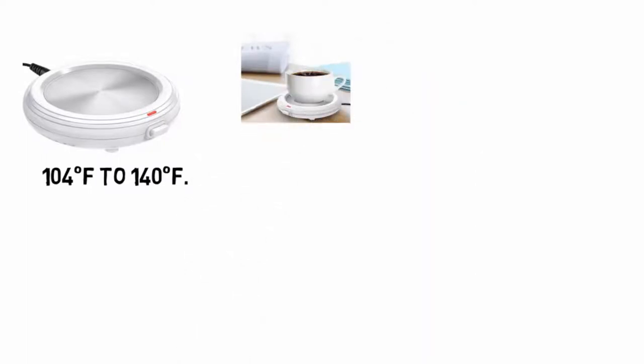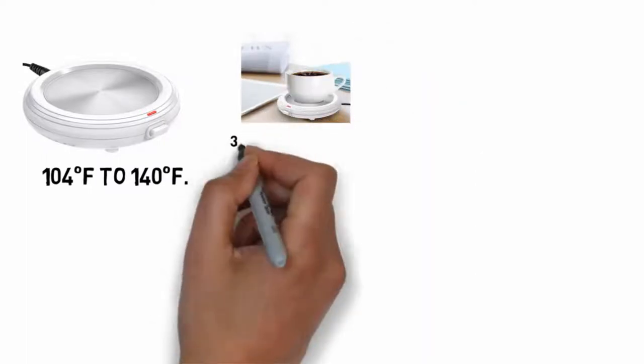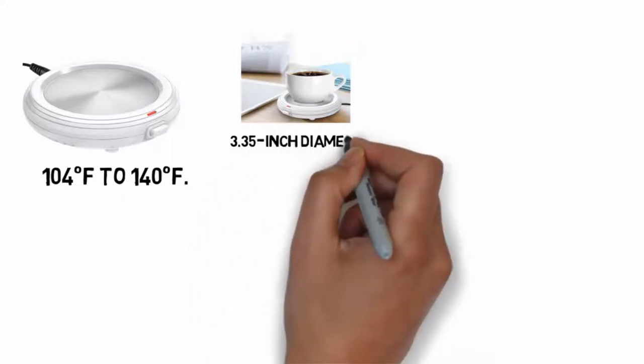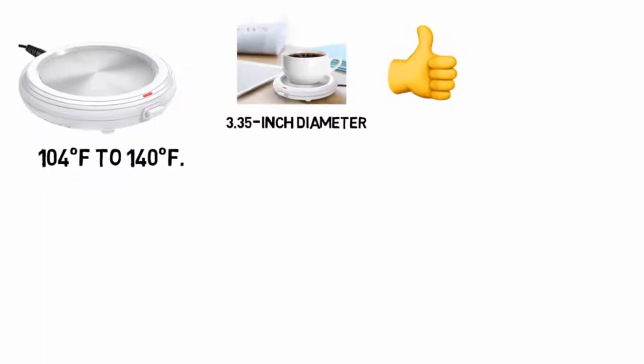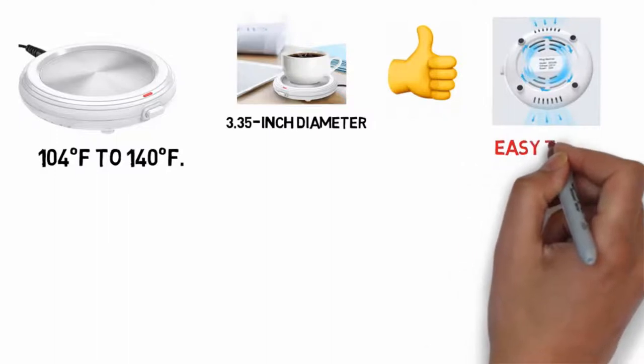The 3.35 inch diameter means that the heating surface is more than enough for any mug. You can use it with any flat bottom cup. With the help of thermal efficiency, the amount of energy consumed by this mug warmer is on the lower side. Moreover, the waterproof design is easy to use and any stain can be wiped clean.